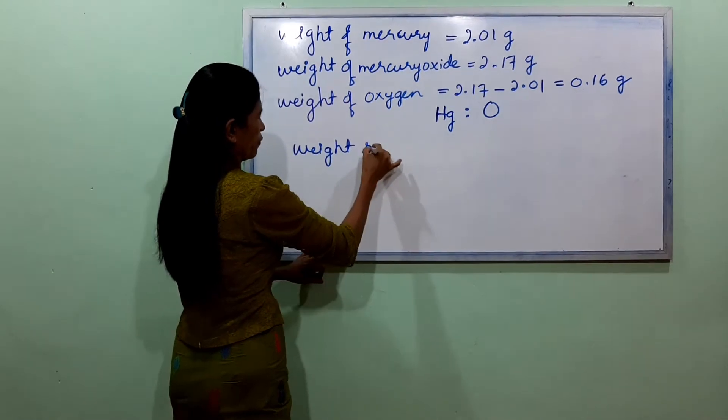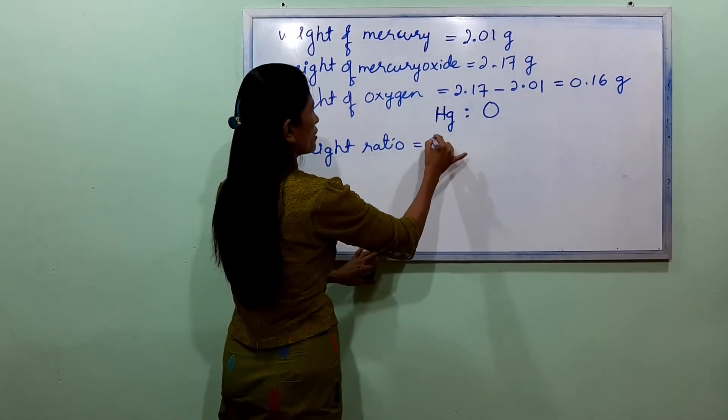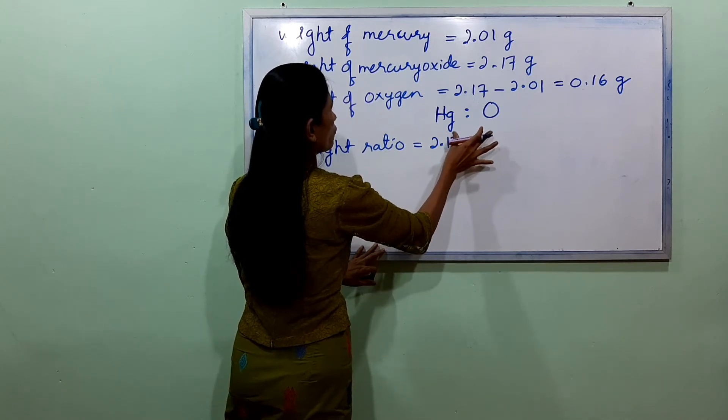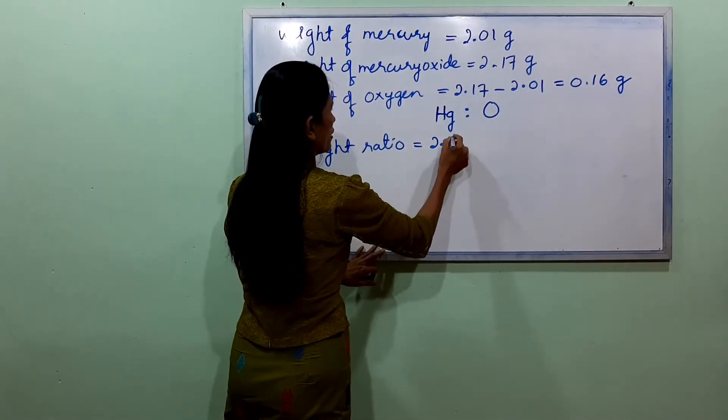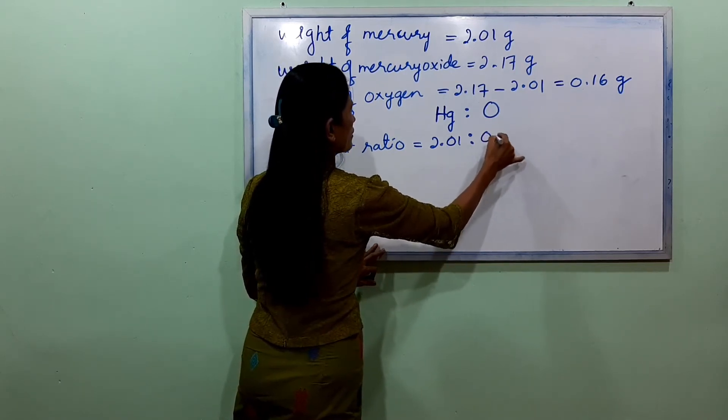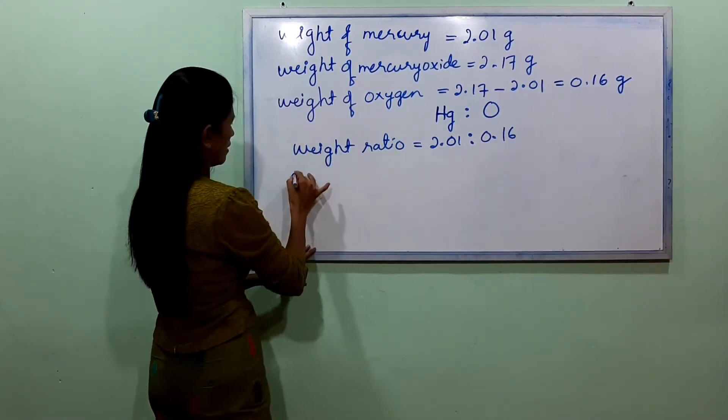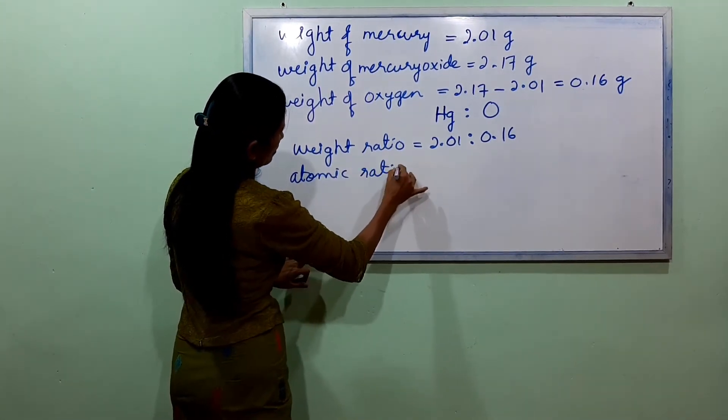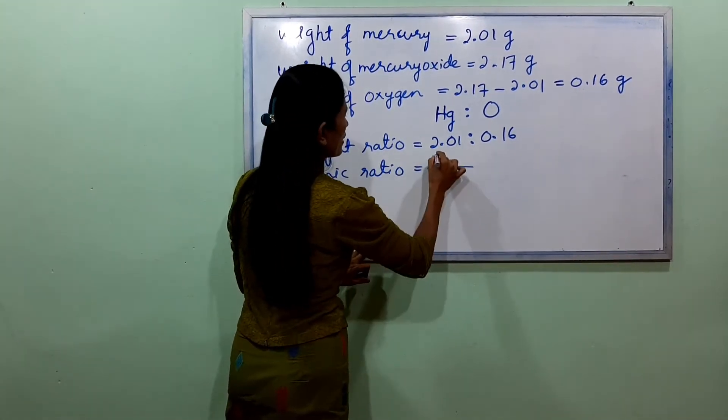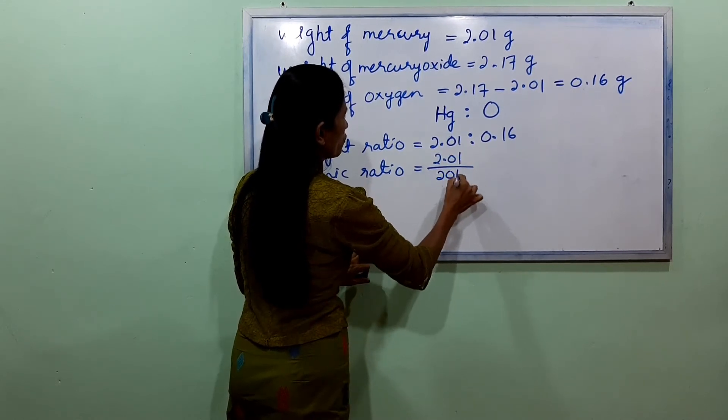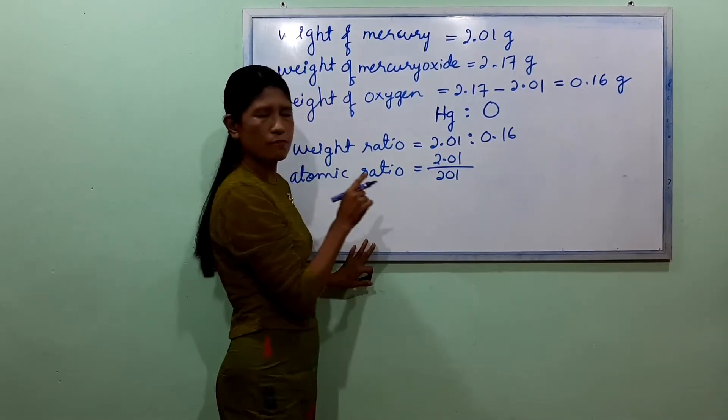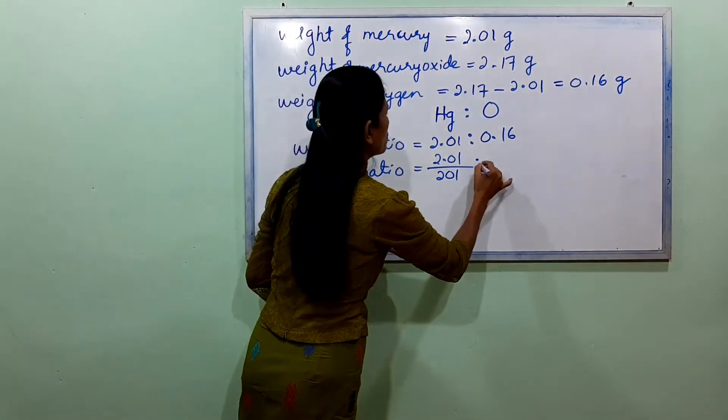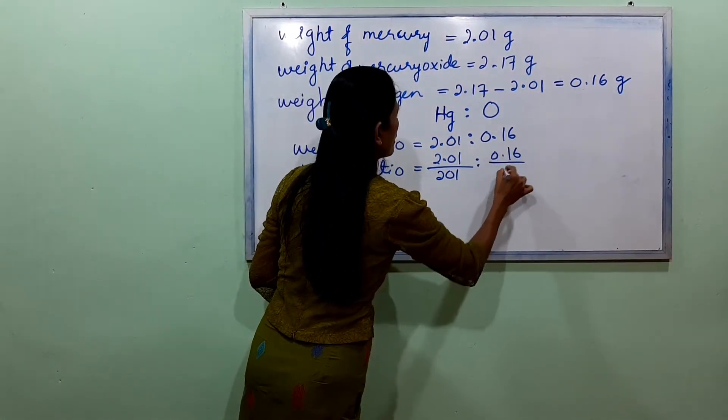The weight ratio is 2.01 for mercury to 0.16 for oxygen. For atomic ratio, we divide by atomic masses: 2.01 divided by 201 for mercury, and 0.16 divided by 16 for oxygen.